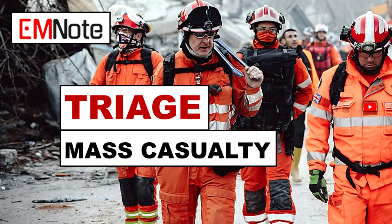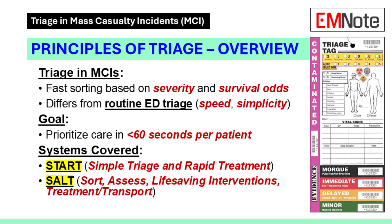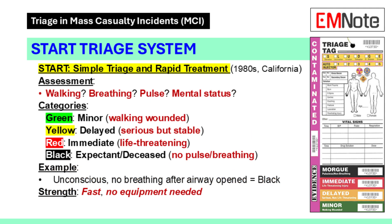So how do we do it? Let's start with triage. Triage in an MCI isn't like triaging chest pain in the ED — it's fast, it's brutal, and it's about sorting patients into who needs help now and who can wait or won't make it. The goal is to identify priorities in under a minute per patient. Two systems dominate disaster triage: START and SALT. START stands for Simple Triage and Rapid Treatment. It's been around since the 1980s, developed by fire departments in California.